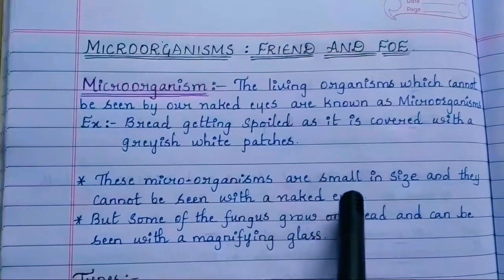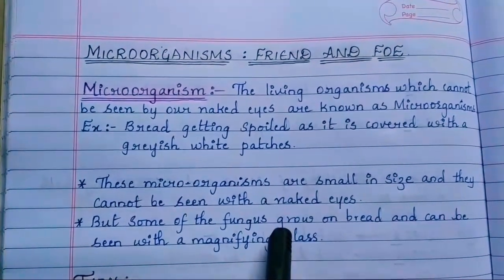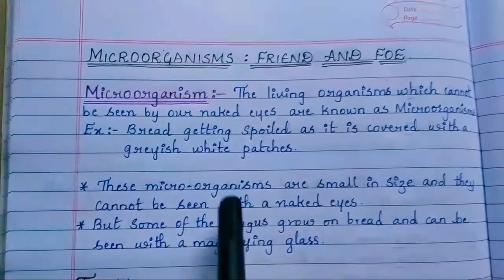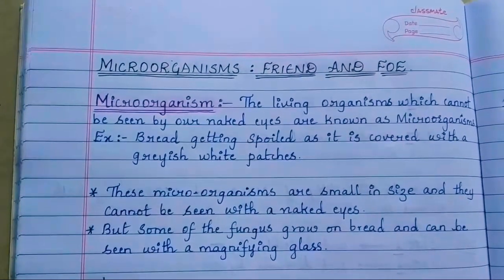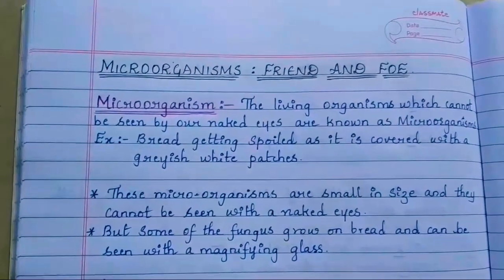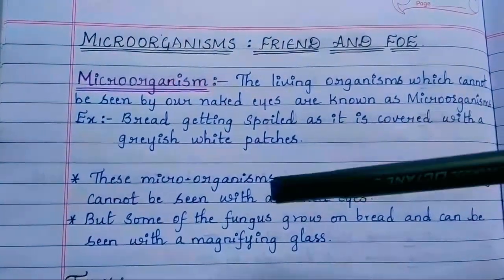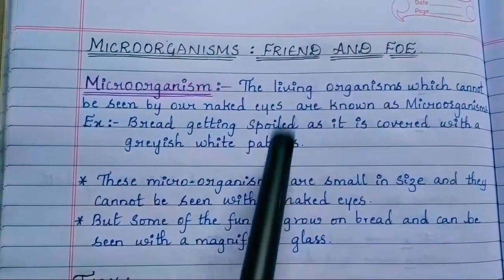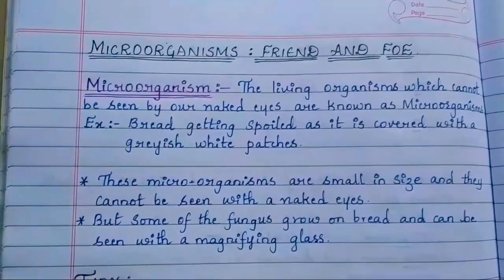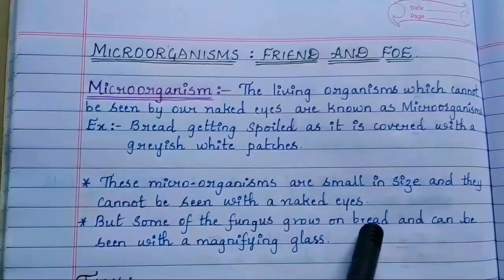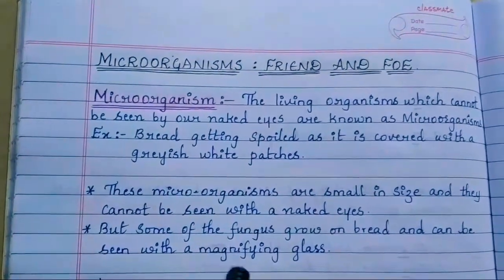These microorganisms are small in size and cannot be seen with the naked eye because of their small size. You know what the size of microorganisms is — they are 10 to the power of minus 9, they are so small. But some fungus grows on bread and can be seen with a magnifying glass. That spoilage on bread is nothing but fungus, a type of microorganism, and it can be seen through a magnifying glass.